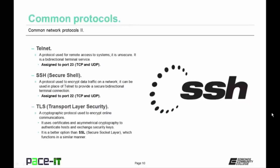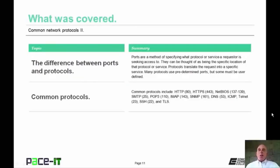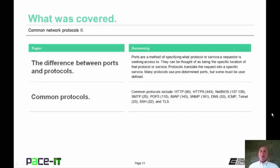Secure Shell, or SSH, is a protocol used to encrypt data traffic on networks. It can be used in place of Telnet to provide a secure bi-directional terminal connection, assigned to port 22 using TCP and UDP. TLS — Transport Layer Security — is a cryptographic protocol used to encrypt online communications. It uses certificates and asymmetrical cryptography to authenticate hosts and exchange security keys. TLS is a better option than Secure Socket Layer, which functions in a similar manner. That concludes this session on Common Network Protocols Part 2.